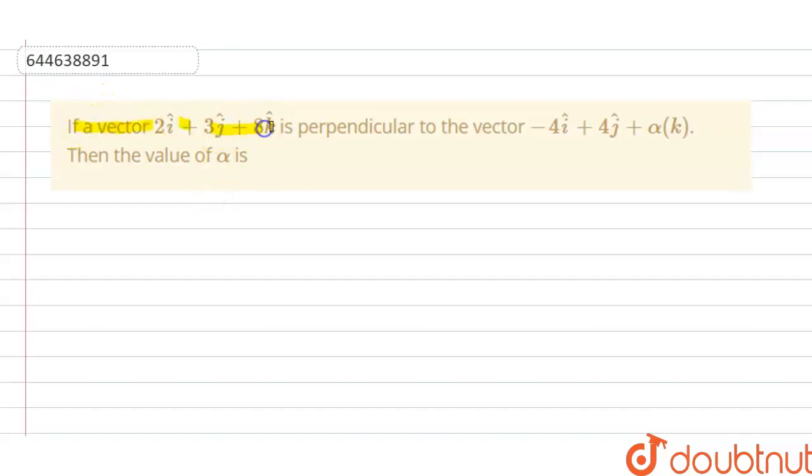if a vector 2i plus 3j plus 8k is perpendicular to the vector minus 4i plus 4j plus alpha k, then the value of alpha is. So the solution of this question is we have the condition for perpendicular vectors.